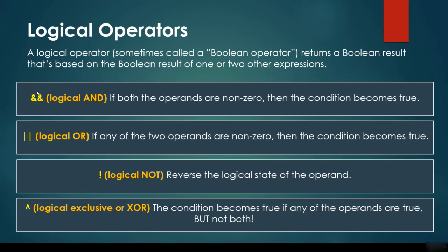We can use the double ampersand (&&), which is the logical AND — if both operands are non-zero, the condition becomes true. The double pipe (||) is the logical OR — if any of the two operands is non-zero, the condition is true. The exclamation mark (!) is the logical NOT, reversing the logical state. The XOR operation returns true if any of the operands are true, but not both.